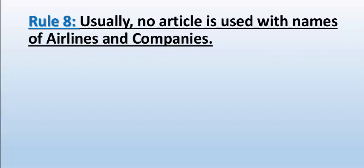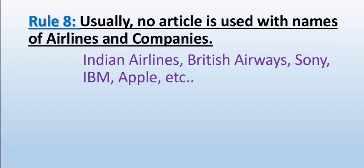This is an extremely important rule — remember it. Rule number eight and the last rule: usually no article is used with names of airlines and companies. You will have observed that article 'the' is never placed before most airline or company names.